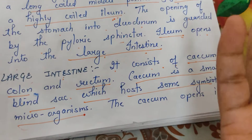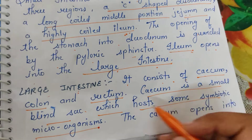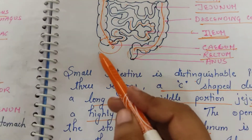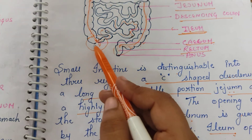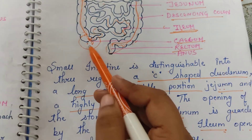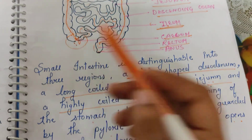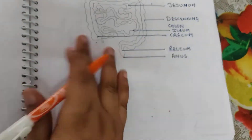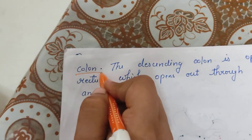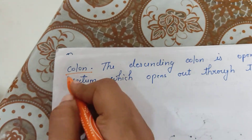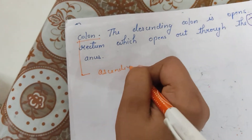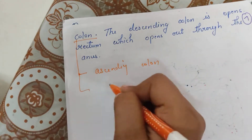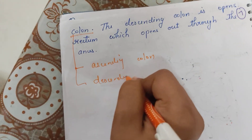The cecum is that part of the large intestine where, if microorganisms enter and cause infection, they create a site of infection there. The cecum opens into the colon. The colon is further divided into ascending colon, where the colon tube starts, and descending colon, where the colon line ends.